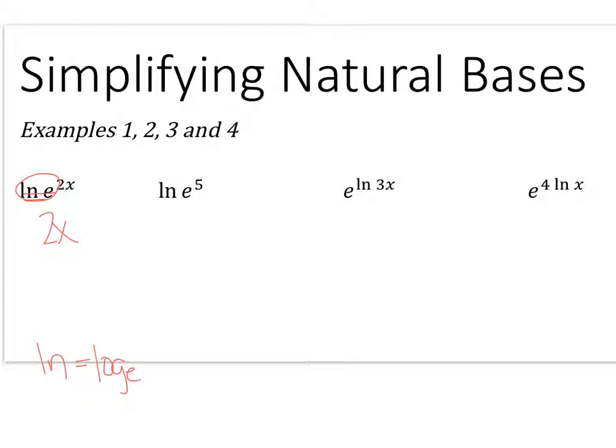The same thing here. I have natural log which is just log base e and I have an exponential that's base e, so those will cancel and I'm just left with the exponent of 5. Here I have an exponential base e and a natural log or log base e. So again since they're right next to each other they just cancel and I'm left with 3x. So far in all of our simplifying, natural log and base e cancel each other out and you're left with what's left.